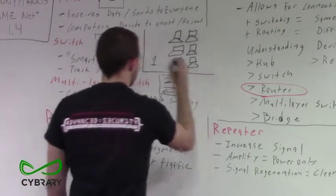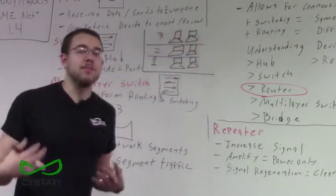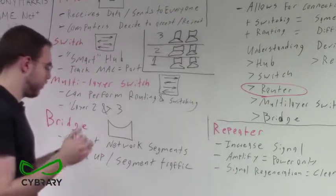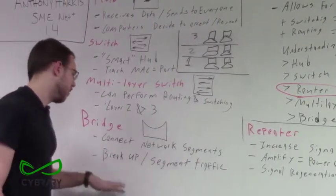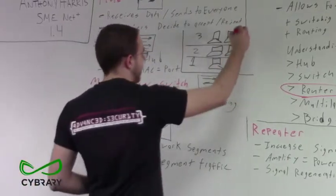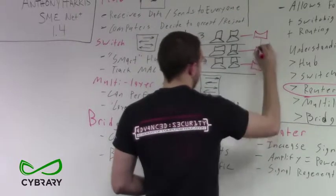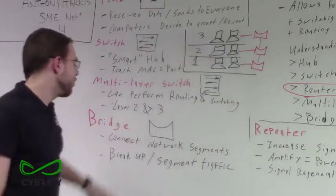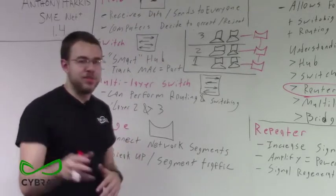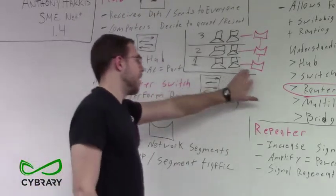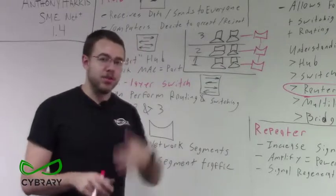Say we have computers on the first floor, second floor, and third floor, and all of them need to be on the same network. Rather than connecting them simply to switches, we can connect them to bridges. Our bridges connect these different network segments and help break up and segment traffic — much like switches manage which device is on which port, a bridge decides whether to keep traffic local or pass it along to a different segment.